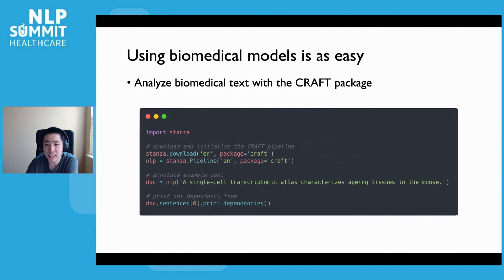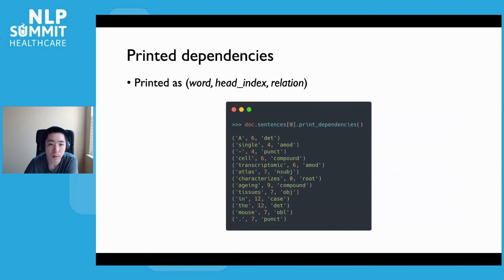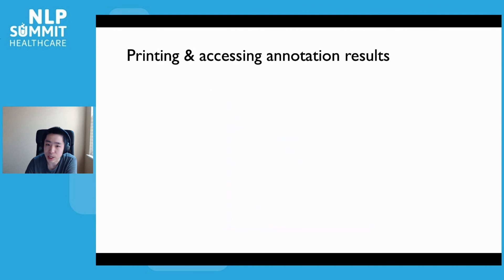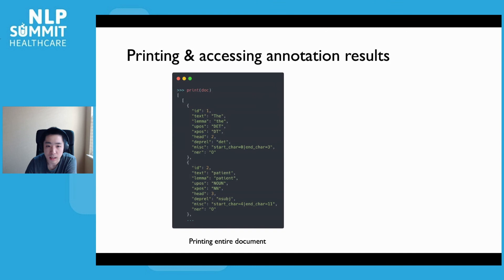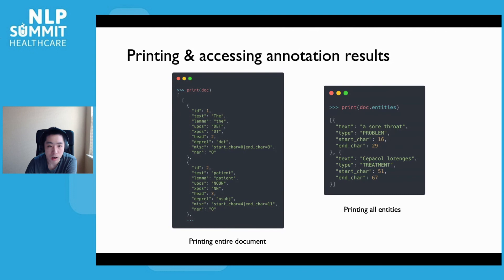Here is another example of how to use the CRAFT biomedical syntax analysis package. You can simply download the model, instantiate the pipeline, annotate the document, and print the annotations. Running the print dependencies command will print the entire dependency structure of the first sentence as a list of tuples, where each tuple is represented as word, dependency head index, and dependency relation type. You can also print or access different syntactic or NER annotations very easily — printing the document object shows all internal annotations as a list of dictionary structures, or you can print the entities attribute to get all entity information as a list of Python dictionaries.